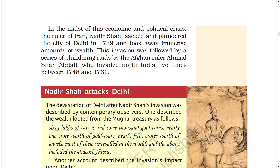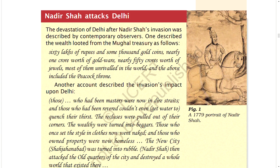In the midst of this economic and political crisis, the ruler of Iran, Nadir Shah, sacked and plundered the city of Delhi in 1739 and took away immense amounts of wealth. The invasion was followed by a series of plundering raids by the Afghan ruler Ahmad Shah Abdali, who invaded North India five times between 1748 and 1761. The devastation of Delhi after Nadir Shah's invasion was described by contemporary observers — one recorded the looted wealth as including 60 lakhs of rupees, nearly one crore worth of gold ware, nearly 50 crore worth of jewels, and the Peacock Throne.